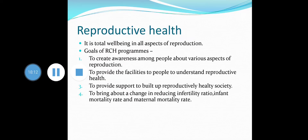Reproductive health is total well-being in all aspects of reproduction. Goals of reproductive and child health care programs: to create awareness among people about various aspects related to reproduction; to provide facilities to understand and build up reproductive health; to support building a reproductively healthy society; and to bring about change in three critical health issues — reducing total infertility rate, infant mortality rate, and maternal mortality rate. In rural areas this mortality rate is very high, so the RCH program works to reduce it.